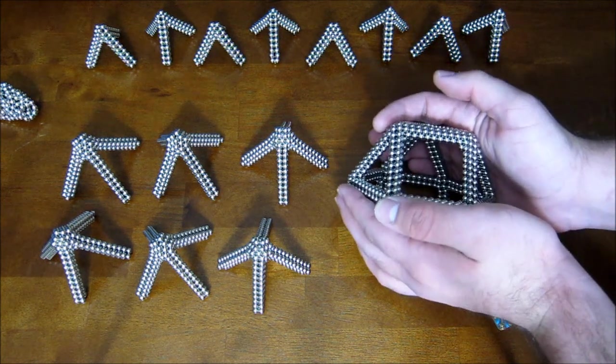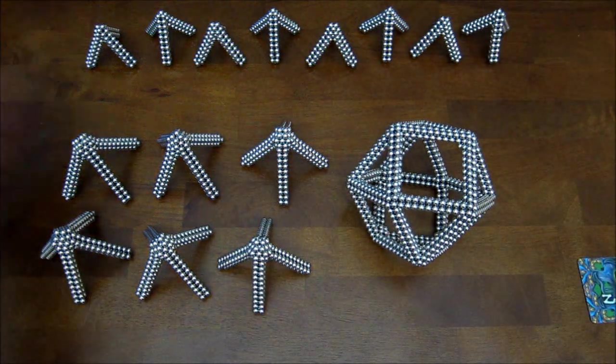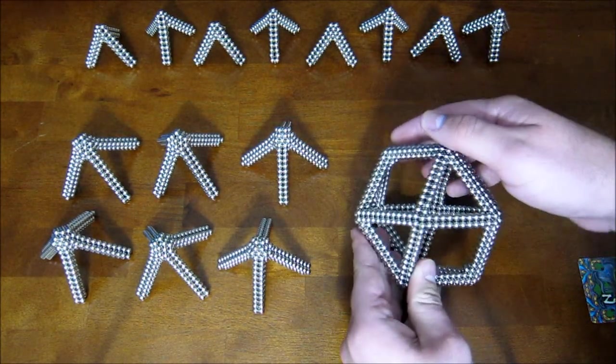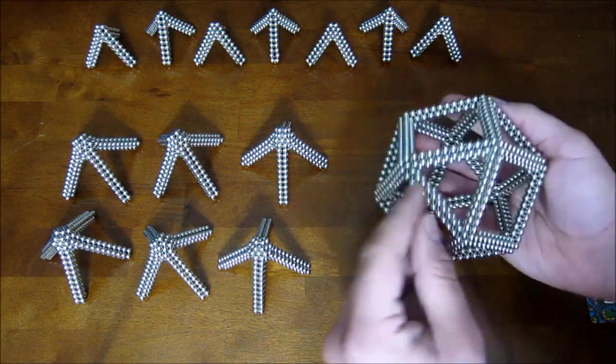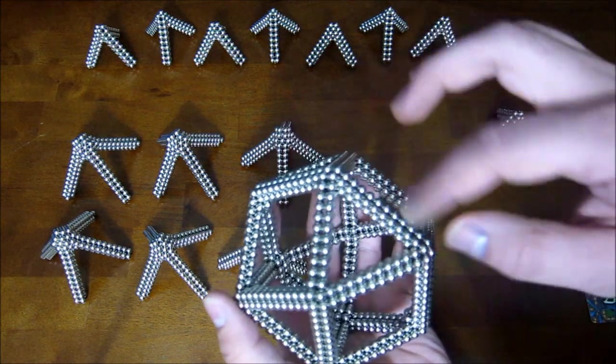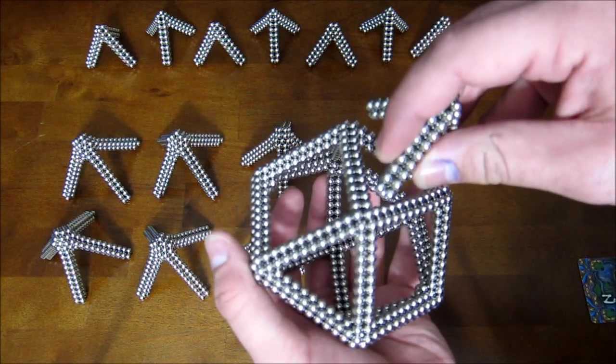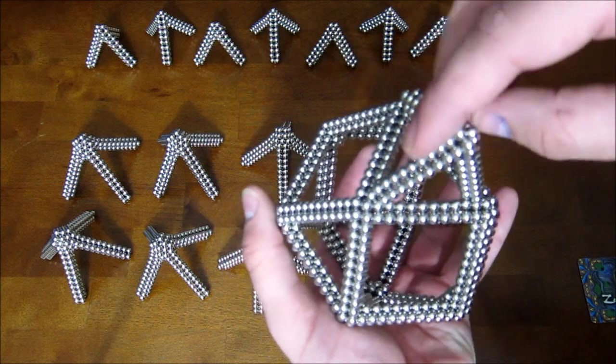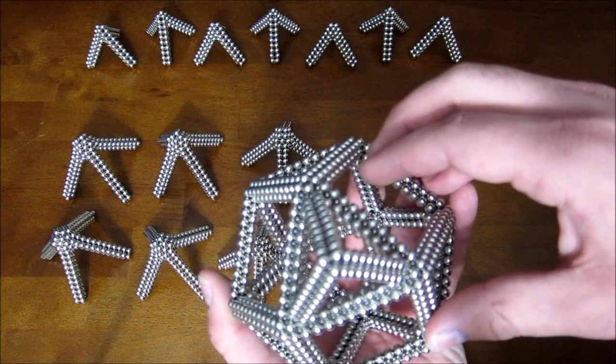And now to start assembling it. So, for the type A, what you want to do is take your cube octahedron and take these triangular points and you want to add them down into these triangular faces. And they just snap in like that, nice and easy.